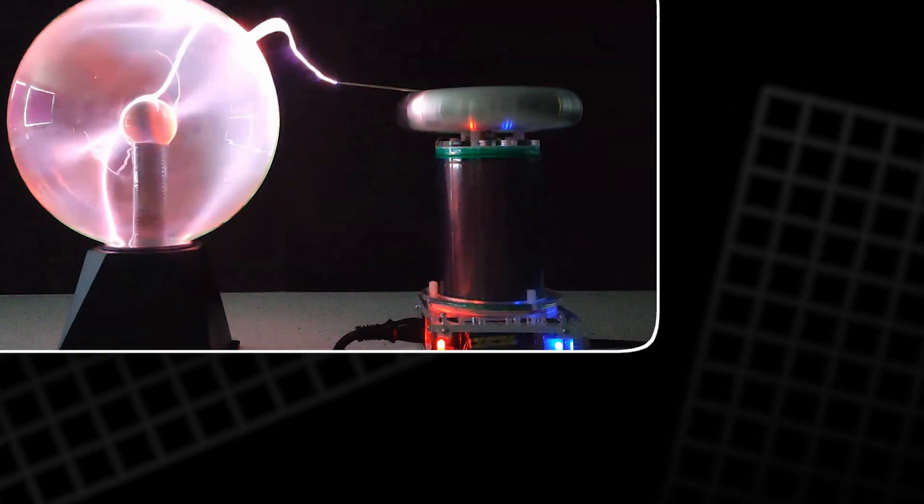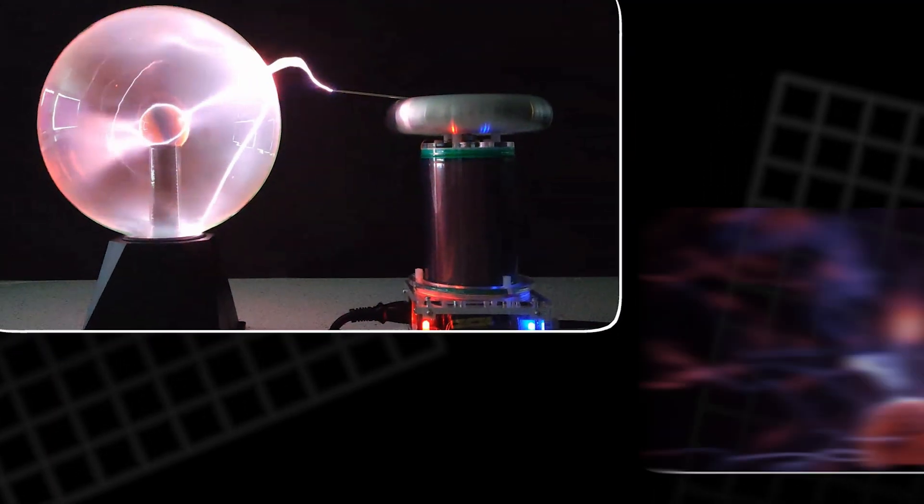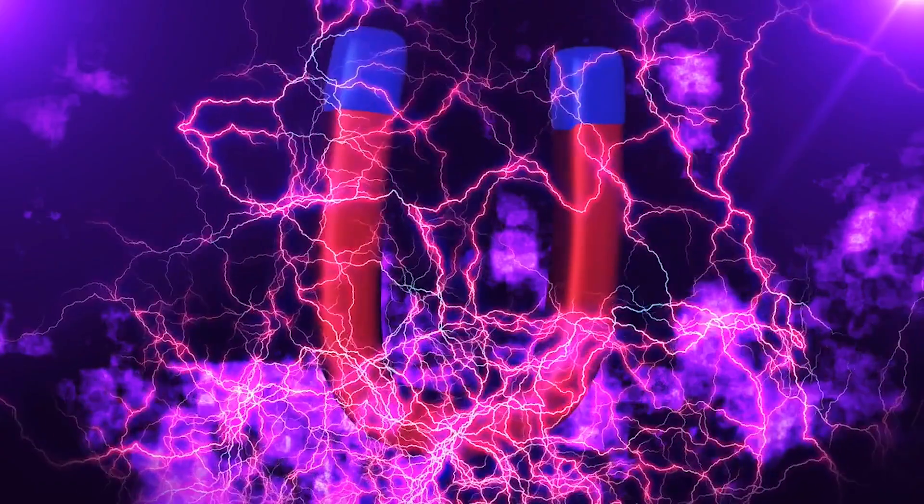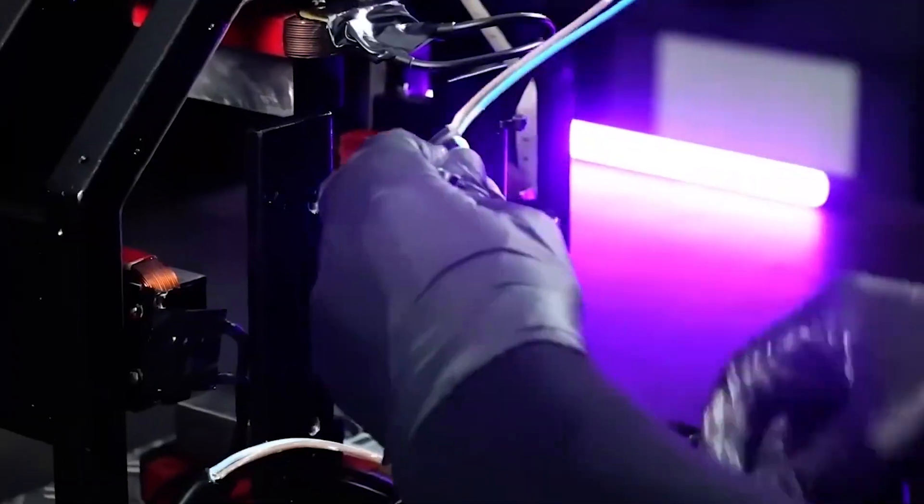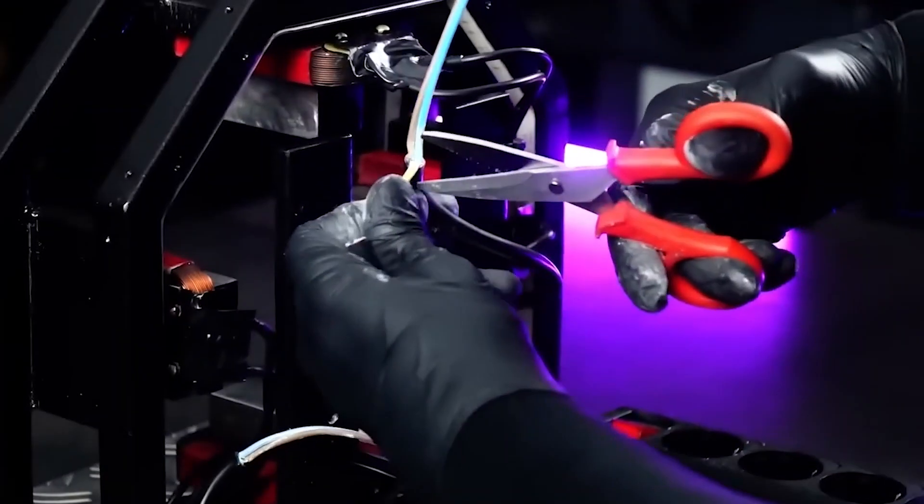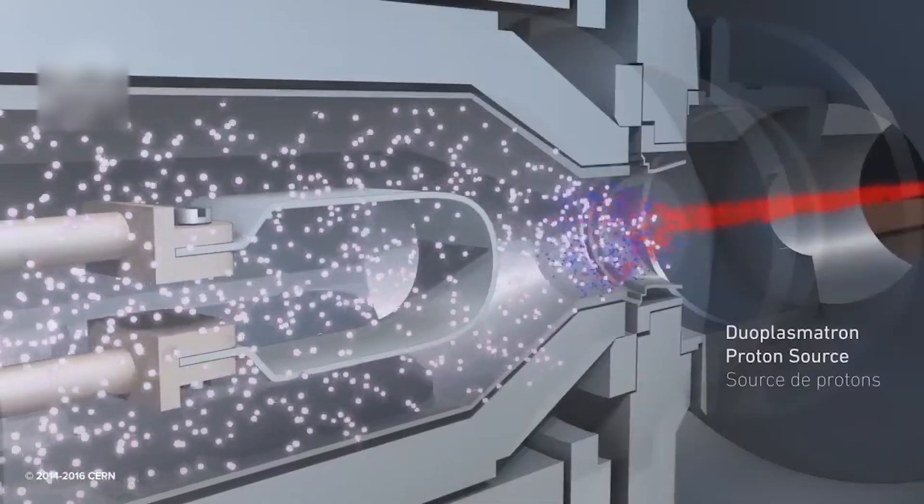When the coil is brought near a sealed tube containing a gas like neon or argon, the electromagnetic energy interacts with the electrons in the atoms of that gas. This interaction is what gives rise to the vivid glow that each element is famous for.